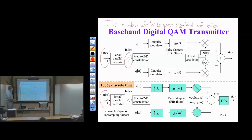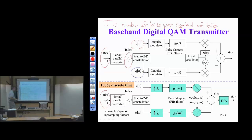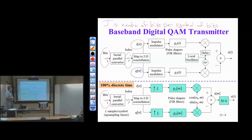Because we're combining two PAM signals in the QAM transmission, we have an amplitude for the in-phase direction and an amplitude for the quadrature direction. We take J bits and map them to two different real-valued amplitudes, then proceed with PAM modulation for the subsequent two blocks — impulse modulator and pulse shaping — doing the same thing in discrete time.